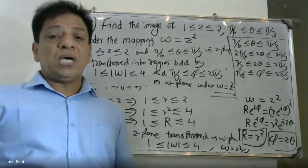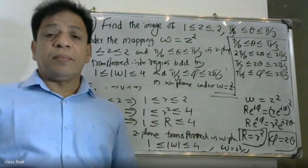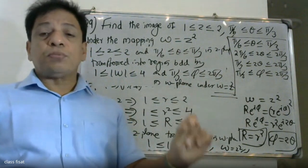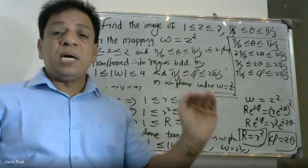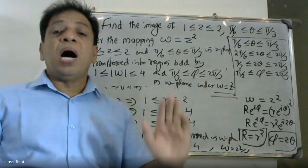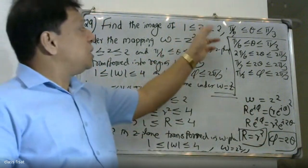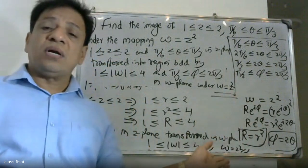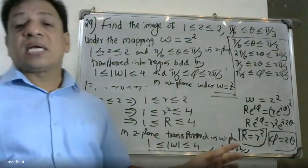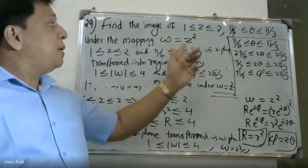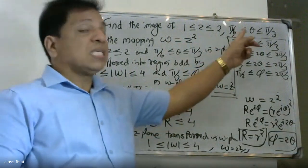To summarize: w = X + iY, with z = r·e^(iθ) and w = R·e^(iφ). Substituting into w = z² and comparing gives R = r² and φ = 2θ. For the first case, 1 ≤ r ≤ 2 implies circles of radius 1 and 2, mapping to radius 1 and 4 in the w-plane. For the second case, 5π/6 ≤ θ ≤ 5π/3 gives 5π/3 ≤ 2θ ≤ 10π/3 in the w-plane.